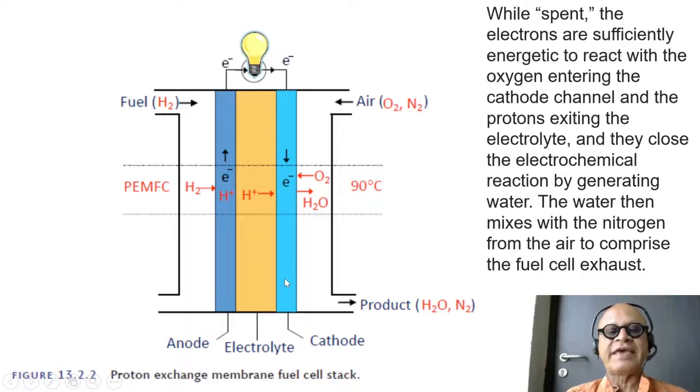So here we are looking at the electrolyte and the anode and the cathode. Again, here we have hydrogen splitting into an electron and a proton. The proton can go through the electrolyte and reach the cathode, so the electron flow again has to find a way through the load.